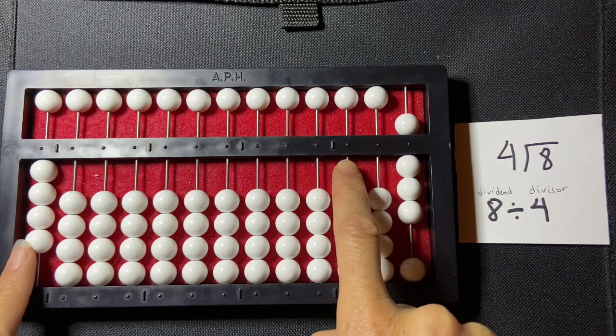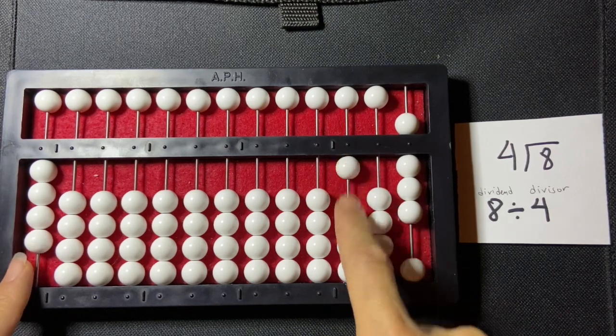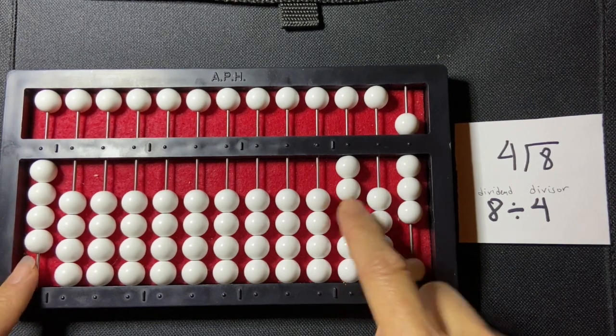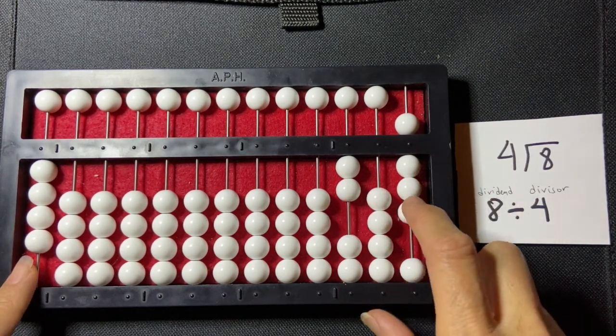So comparing four to eight, I know four goes into eight two times, so I say two times four is eight, and I'm going to subtract that from my dividend.